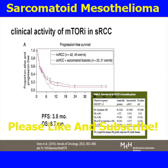Martin Foss then looked into mTOR activity in sarcomatoid RCC. In sarcomatoid cases — only 23 patients — there is some response to mTOR inhibitors, kind of suggesting that it may play a role in this disease. But progression-free survival was 3.5 months and overall survival 8.7 months, still within the range of other therapies.